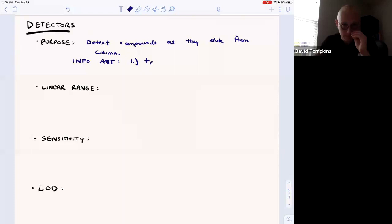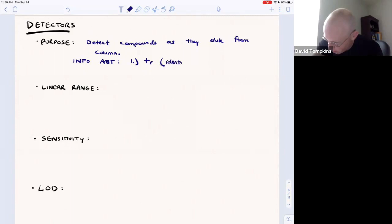That retention time can be used to identify a compound in an experiment if you already know the retention time of that pure compound that was isolated previously. It can also be used to find the peak area.